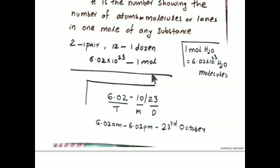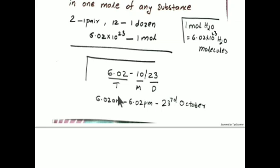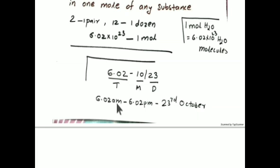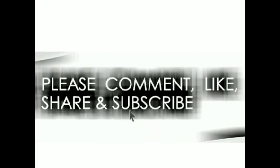How is the date set using Avogadro's number? The number is 6.02 × 10²³. Write it as 6:02, 10, 23. The time duration 6:02 AM to 6:02 PM comes from 6.02. The 10 is the 10th month, that is October. And 23 is the date — the 23rd. So Mole Day is 23rd October, 6:02 AM to 6:02 PM. Thank you.